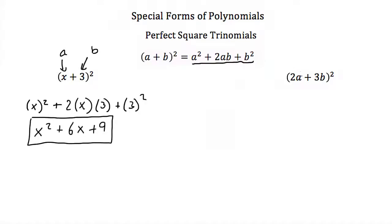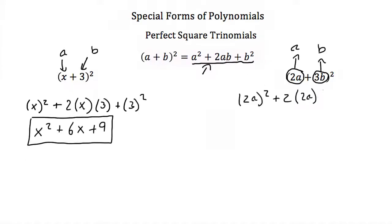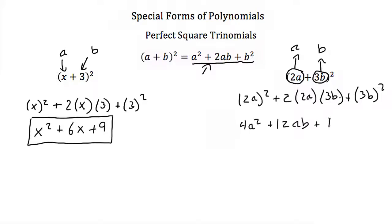Let's try another example: 2a plus 3b squared. Here our a is actually 2a and our b is actually 3b. Plugging in, we get 2a squared plus 2 times 2a times 3b plus 3b squared. Simplifying: 2a squared is 4a squared, 2 times 2 times 3 is 12 giving us 12ab, and 3b squared is 9b squared. So 2a plus 3b squared equals 4a squared plus 12ab plus 9b squared.